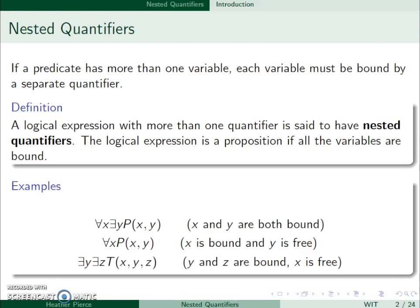Here are some examples. For all x, there exists a y such that P(x,y). In this case, x and y are both bound, so this is a proposition. Another example: for all x, P(x,y). In this case, x is bound but y is free, so this is not a proposition.